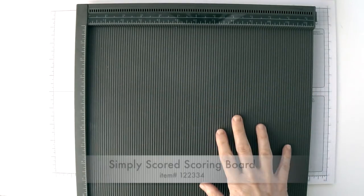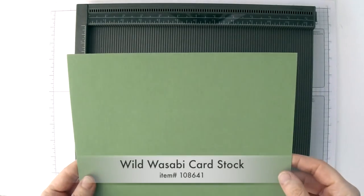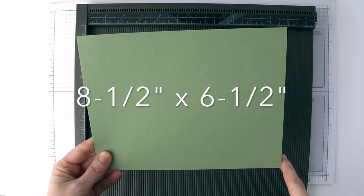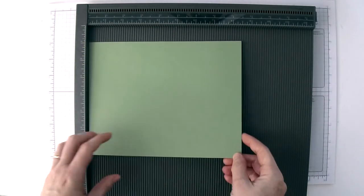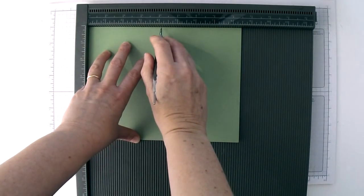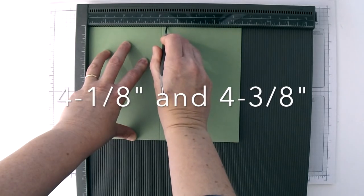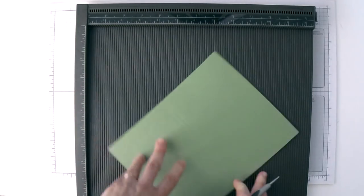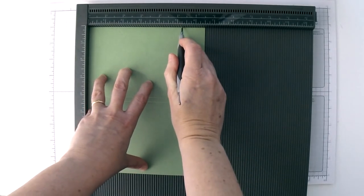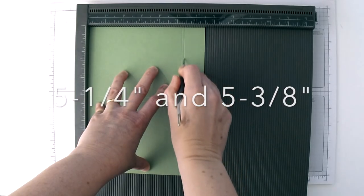We are going to be using the Simply Scored scoring board and you're going to need a piece of wild wasabi cardstock. I've cut this piece to eight and a half inches by six and a half inches. So we're going to put the eight and a half inch side up at the top and you're going to score at the four and one eighths inch mark and the four and three eighths inch mark. Then you're going to turn it to the six and a half inch side and you're going to score it at the five and a quarter inch mark and the five and three eighths inch mark.